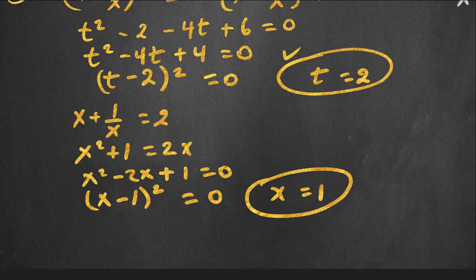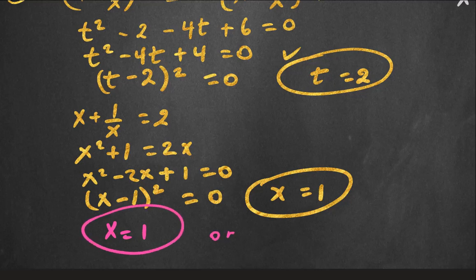So if we look at our equation and make successive divisions, we see that x equal to 1 is actually the only solution. It is a quadruple solution — it is the only solution for this problem. Thank you for watching.